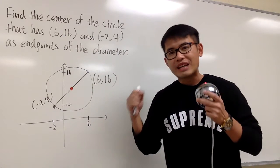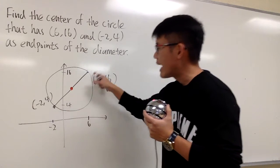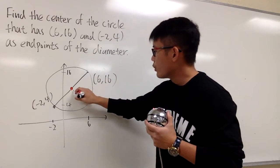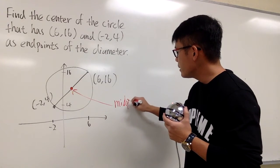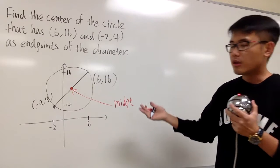Well, in another word, we just have to find the midpoint between this and that. That's all. So, right here, let me just write down. We are going to find the midpoint, in this case, that will be the center of this circle.